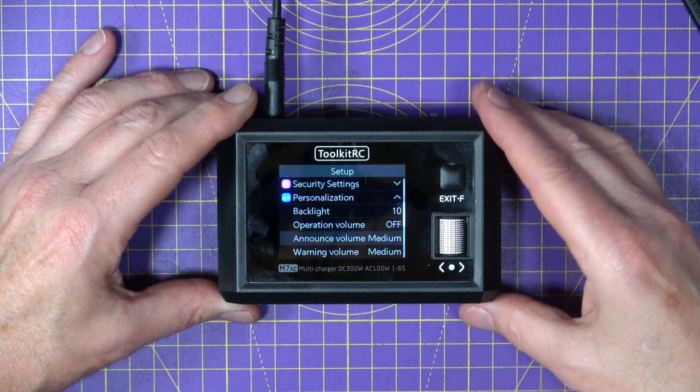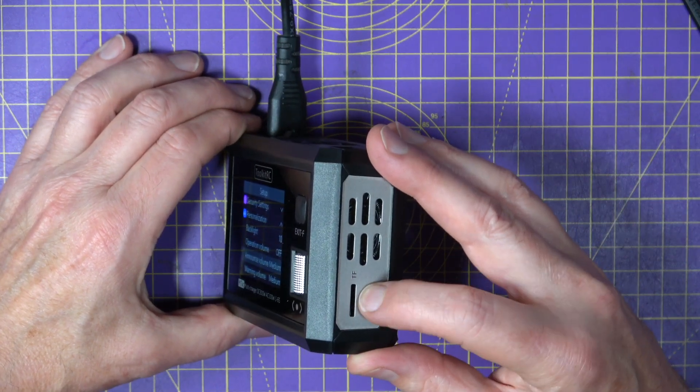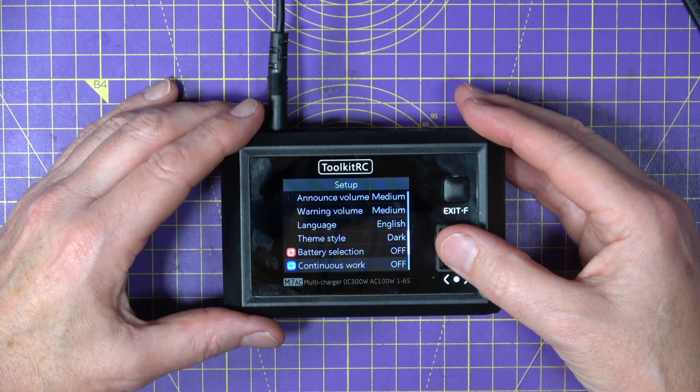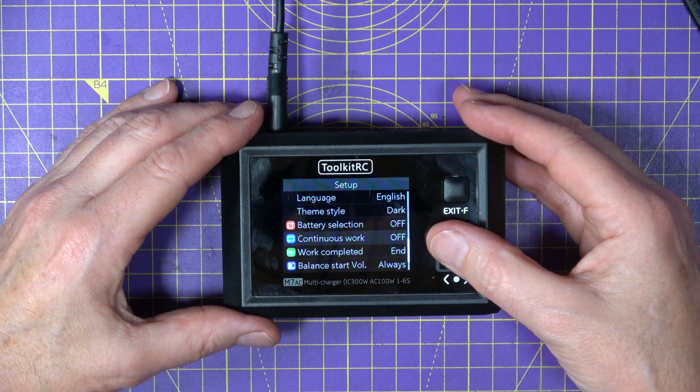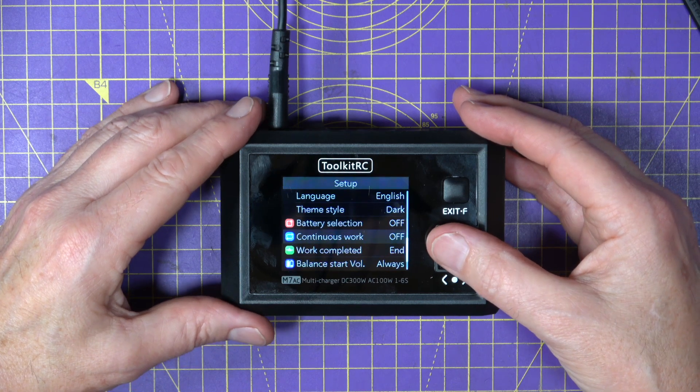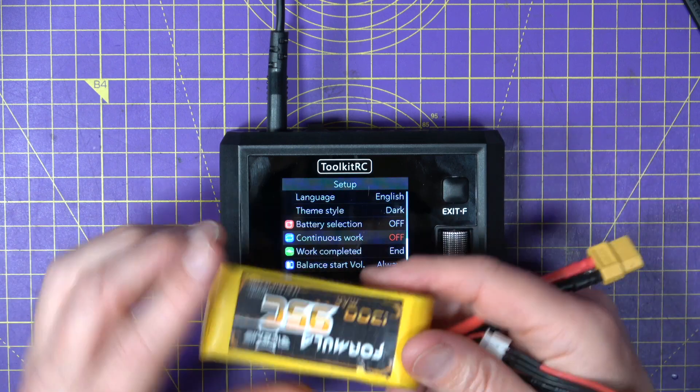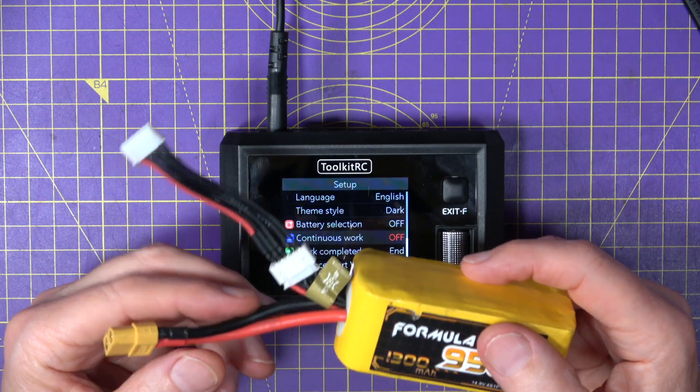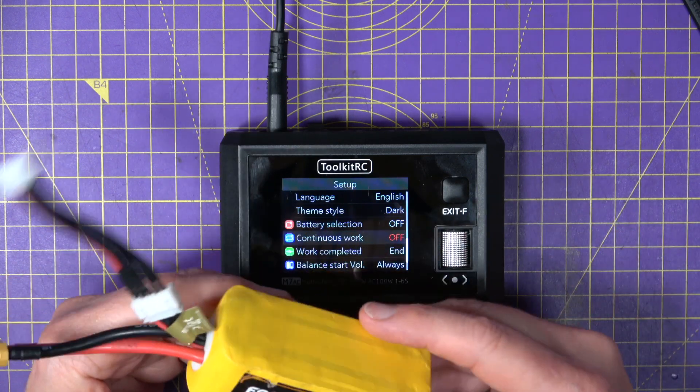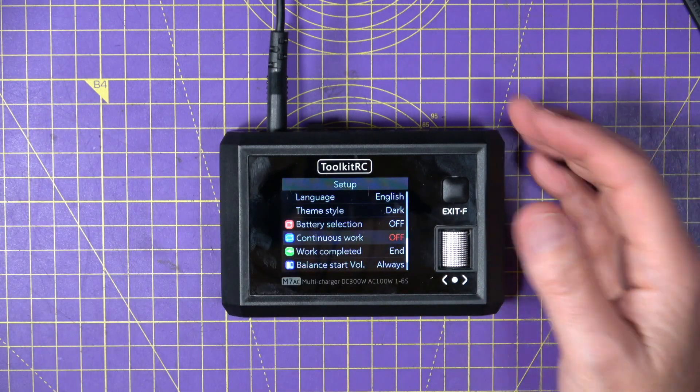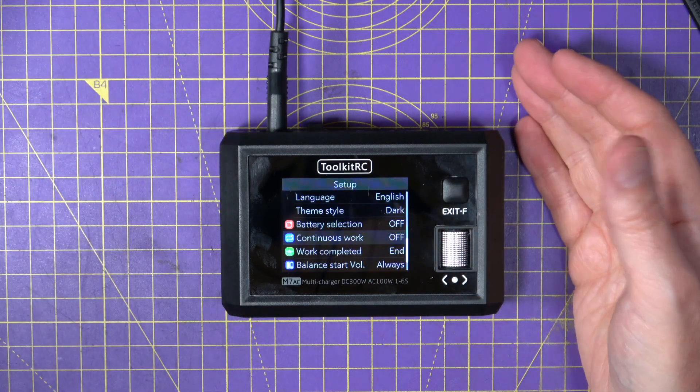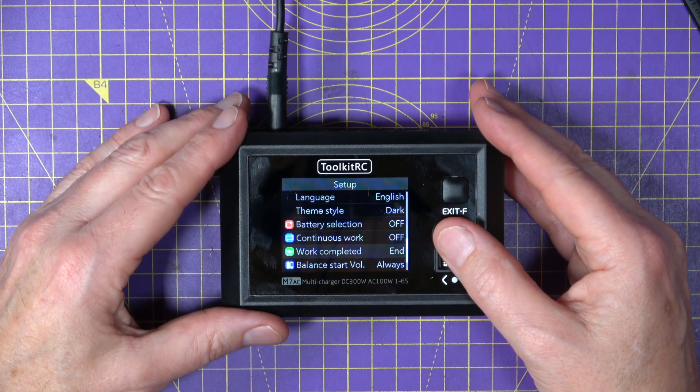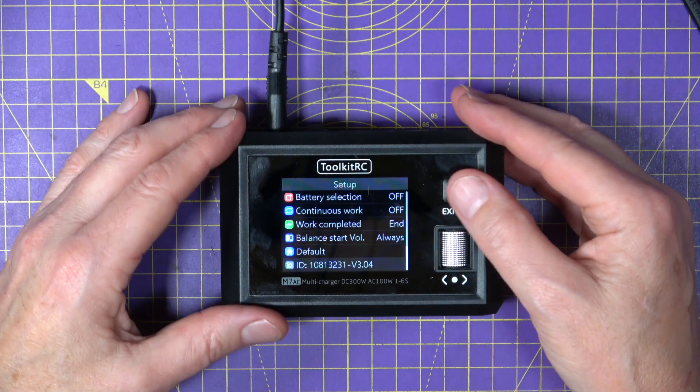And then you've got a whole load of things like the announcement volume, warning volume, that's if you're using an SD card on the side here with different voices on it. I don't bother using that to be honest. Then you've got a whole load of things like continuous work, for example. So if you're charging say four of these and you start charging it, if you unplug it when it's finished and then plug another one in it will just carry on charging with the same settings as before which is very useful if you've got a lot of batteries that are very similar and you're charging them all up together, which is very nice, plus a whole load of other stuff.